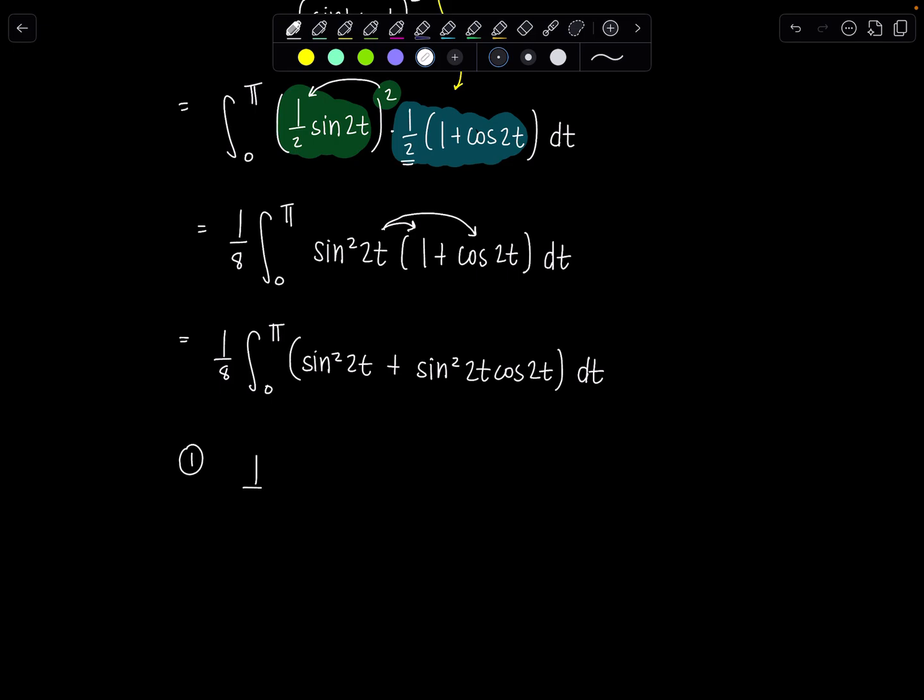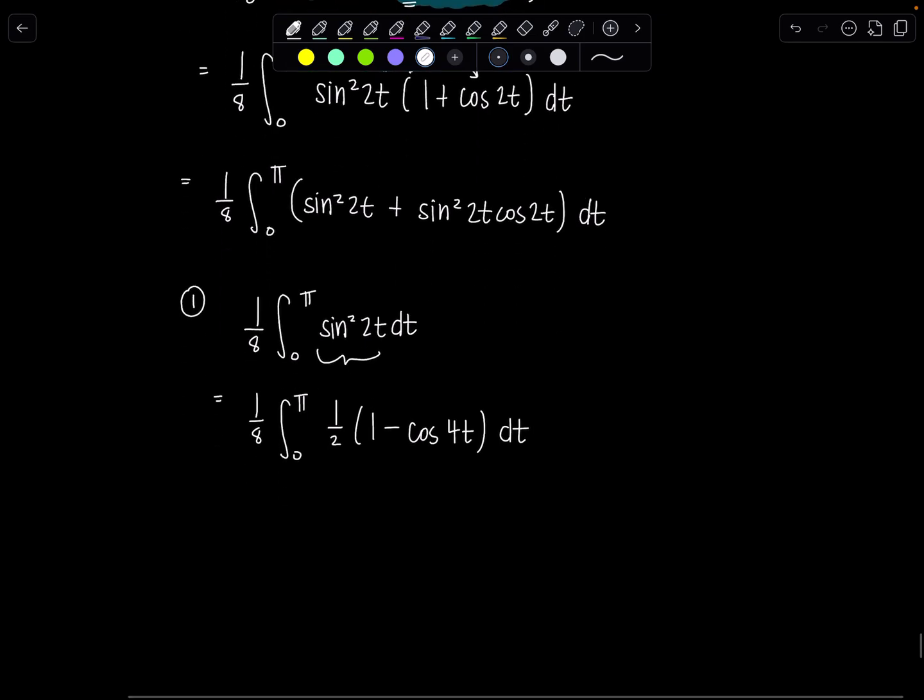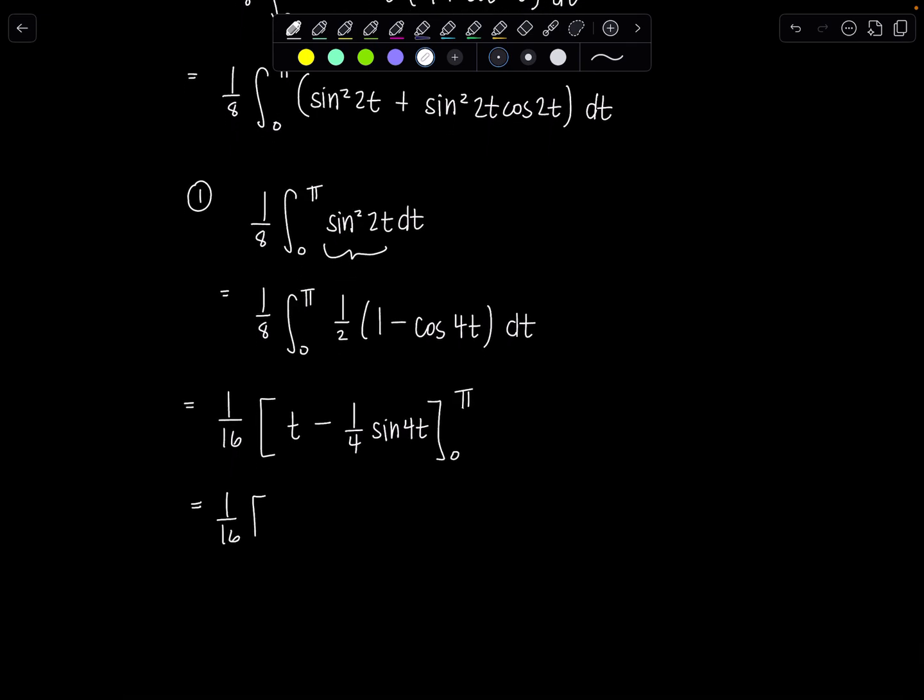So first integral is going to be one eighth integral zero to pi sine squared 2t dt. We're going to use our half angle identity. Replace sine squared 2t with one half times one minus cosine, now it needs to be 4t. You double the argument. So we've got one sixteenth outside. Antiderivative of one is going to be t minus one fourth sine 4t. And we'll evaluate that from zero to pi. So this is going to be one sixteenth times pi minus one fourth times sine of four pi zero minus my lower limit of zero. Everything's zero. So this is pi over sixteen.